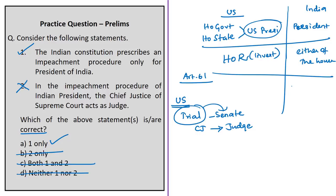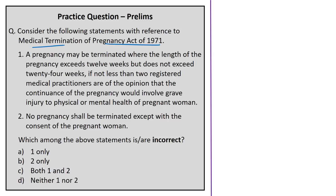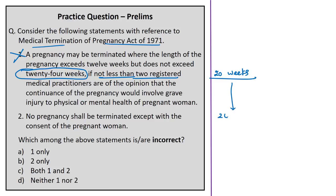The next question is about the Medical Termination of Pregnancy Act of 1971. Statement 1 states that a pregnancy may be terminated where its length exceeds 12 weeks but does not exceed 24 weeks if not less than two registered medical practitioners are of the opinion that continuance would involve grave injury. This statement is incorrect — under the current law, the limit is 20 weeks, not 24 weeks, when two or more practitioners are involved. The recently proposed amendment seeks to increase this upper limit to 24 weeks.